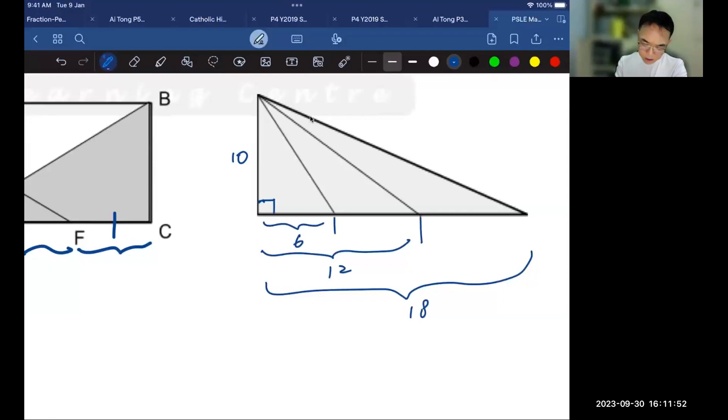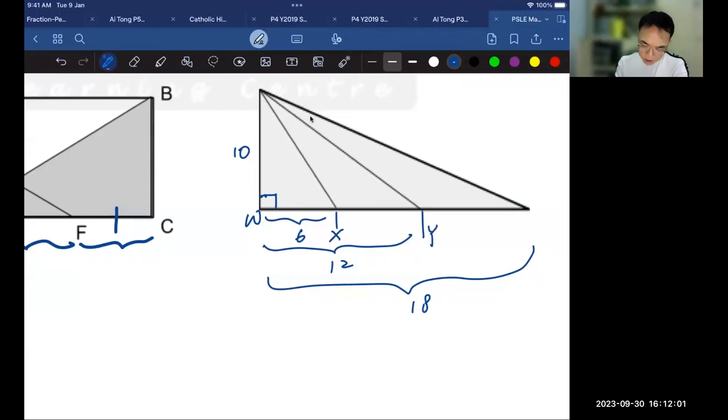And we know that for example, WX compared to WY, WY is double of WX, and WZ is 18 compared to 6, so that's three times.